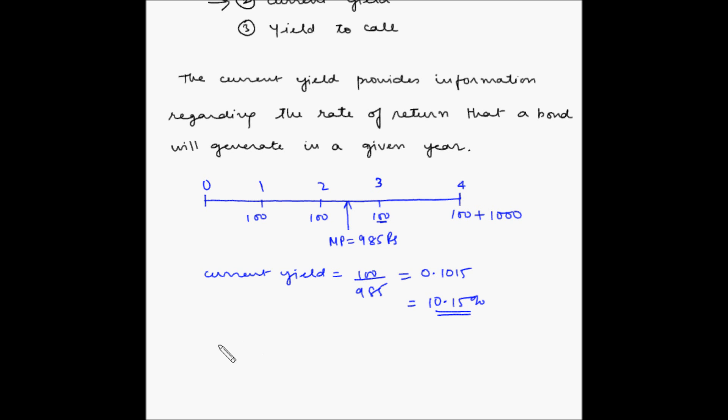In generic terms, we can write the formula for calculating current yield as: current yield equals the annual interest payment divided by the bond's current price. It's basically the market price.